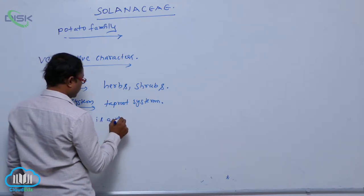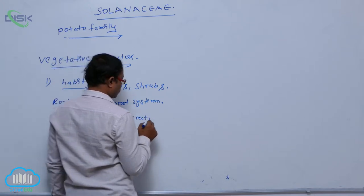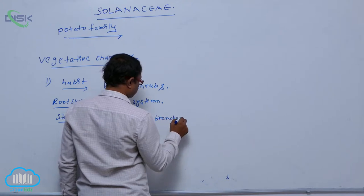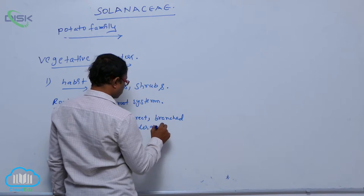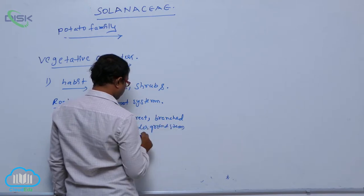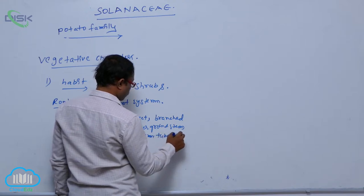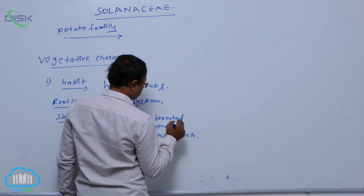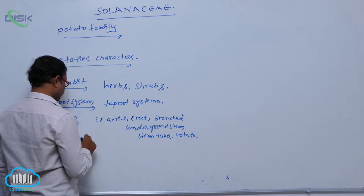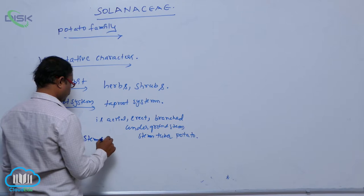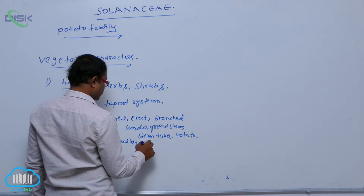The stem is aerial, erect, and branched. There is an underground stem modification known as stem tuber, which is not potato. The stem is covered by glabrous hairs.